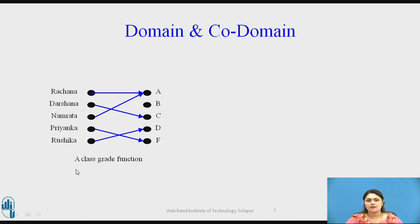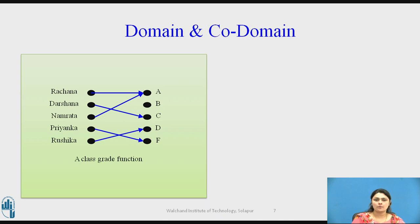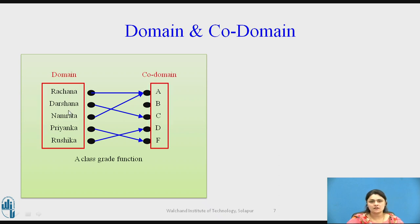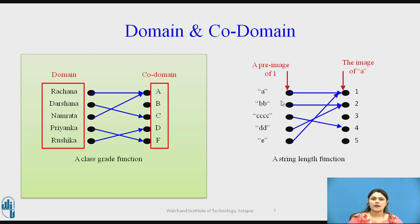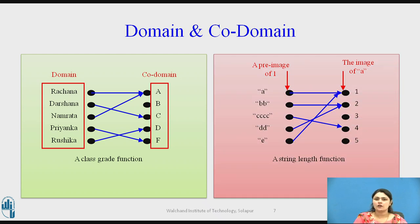Consider a class grade function: elements on one side are the domain and elements on the other side are the co-domain. Another example is the string length function. Here, A is a pre-image of 1 — we are calculating the string length, so the length is 1. The image of A is 1, and the pre-image of 1 is A.